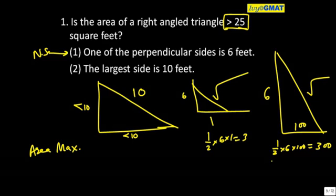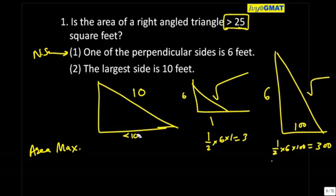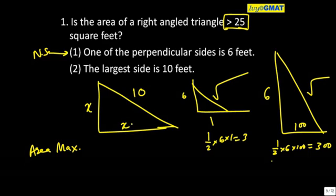So this area is maximum when the sides are actually equal. If you don't know this right now no problem at all. If this value is x, this value is x, then only the area comes out maximum.